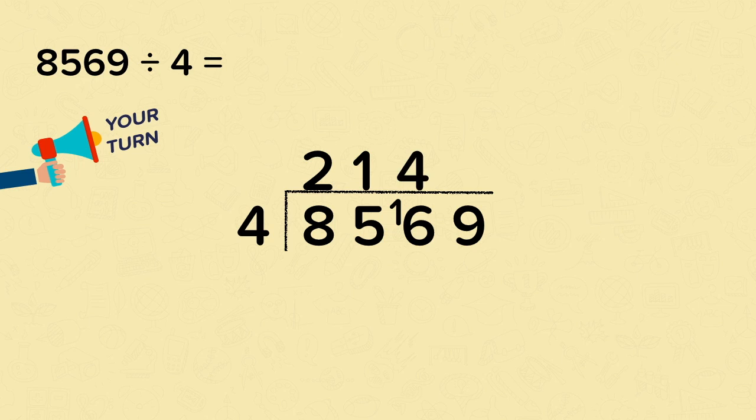And then onto the ones. Nine divided by four is two, remainder one. So very well done if you got two thousand one hundred and forty-two, remainder one as your answer.